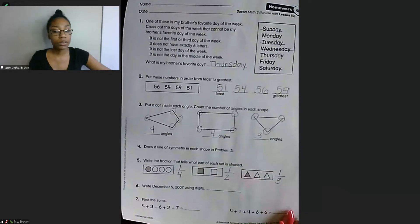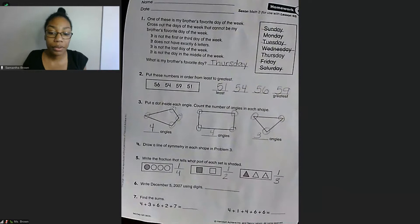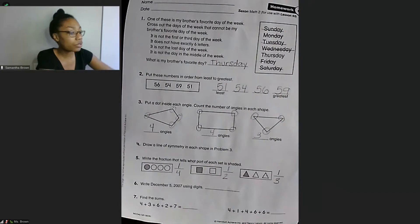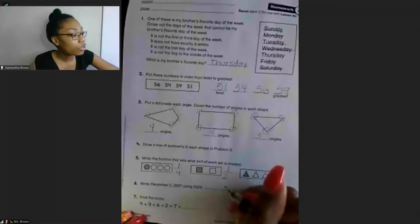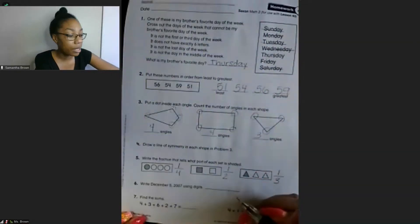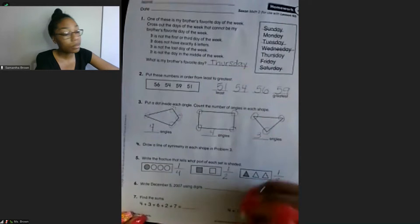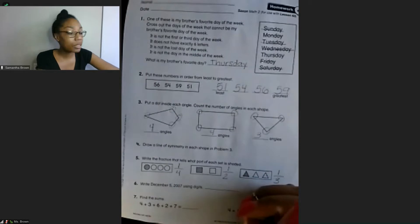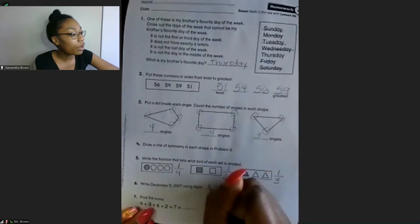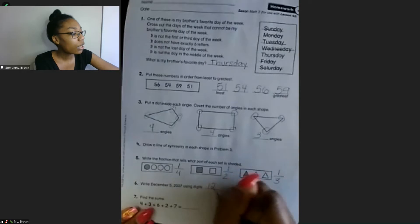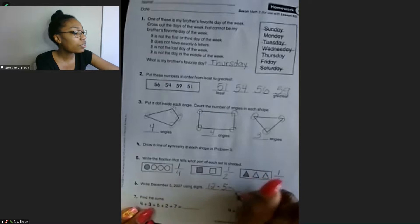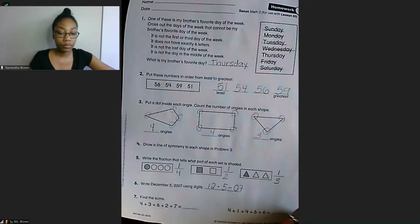Next one, number six, write December 5th, 2007 using digits. So using numbers, write that date. You can use a dash or slash, it doesn't matter. So December is the 12th month of the year, so we're going to write 12, dash 5, dash 07.